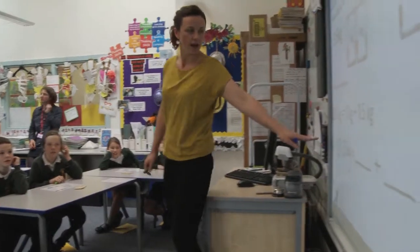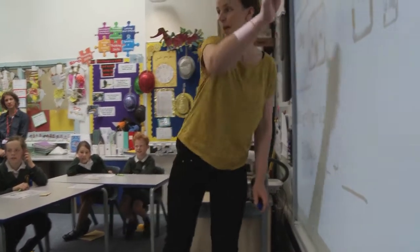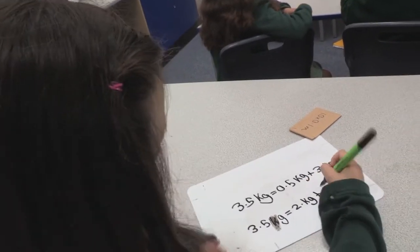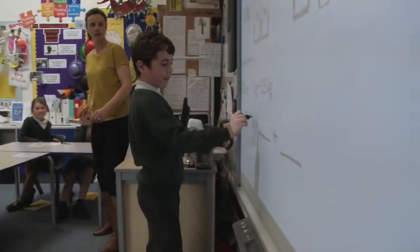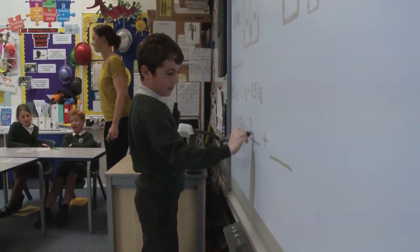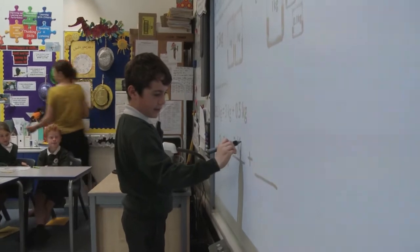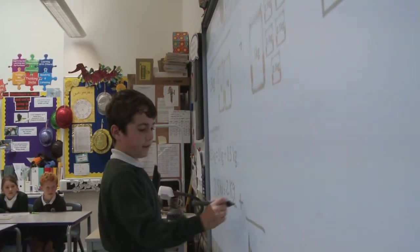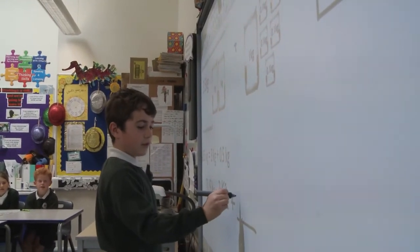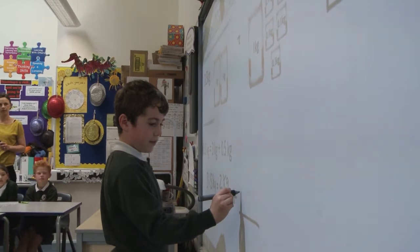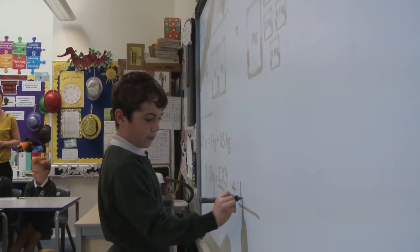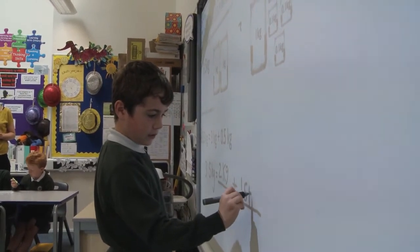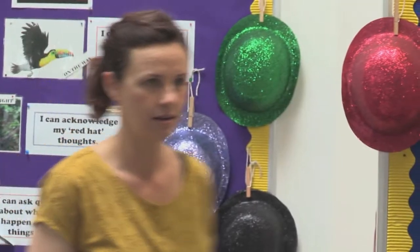So, who can come and complete the number sentence that represents this way of partitioning? 3.5 kilograms. Okay, Dylan, up you come. So, because there's 2 kilograms, you put 2 kilograms here, and there's 1.5 — 1 kilogram and 5 tenths of a kilogram. So, it would be 1.5 kilograms. Fantastic.